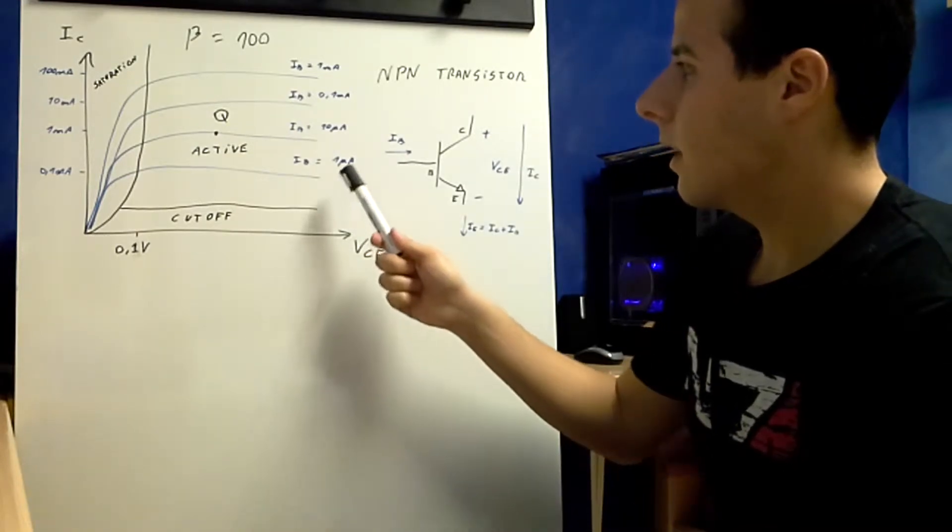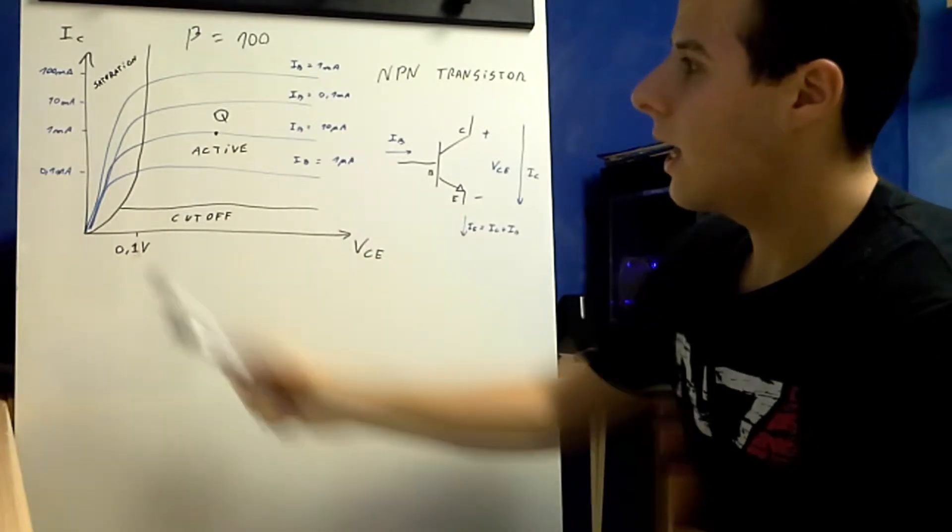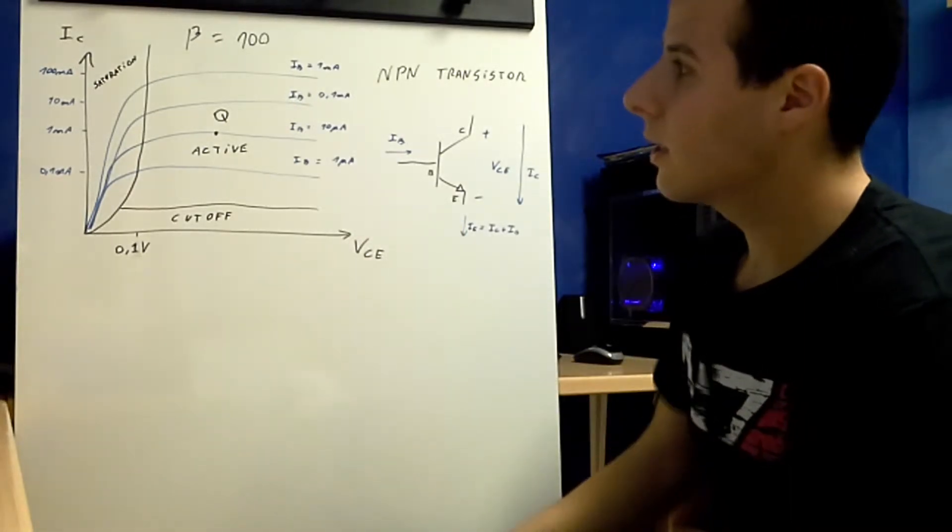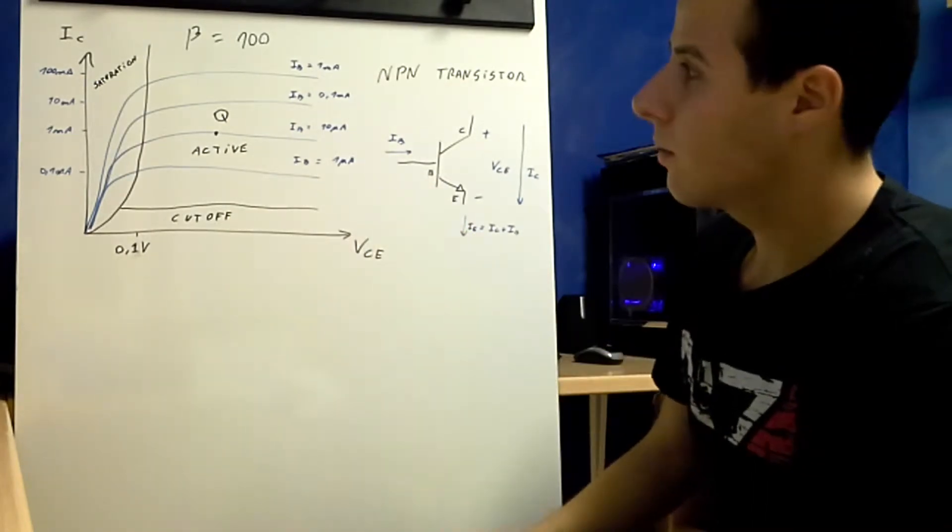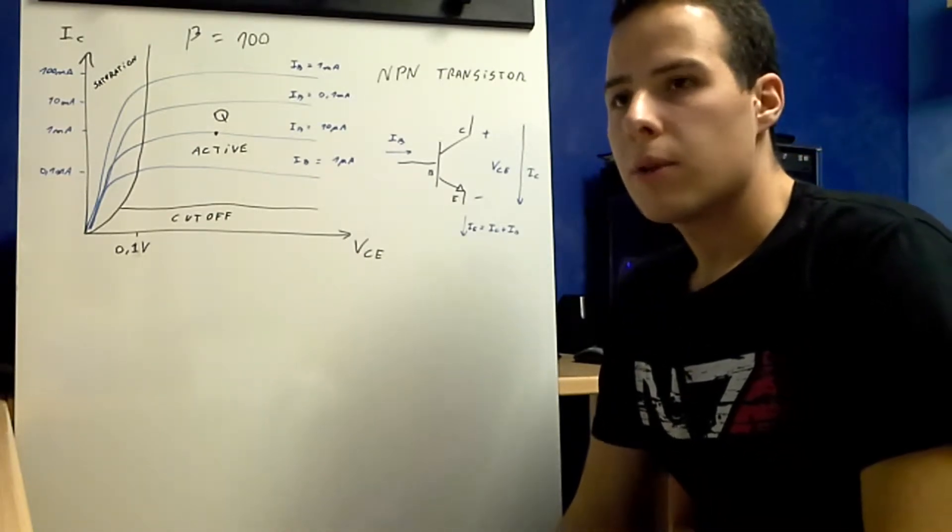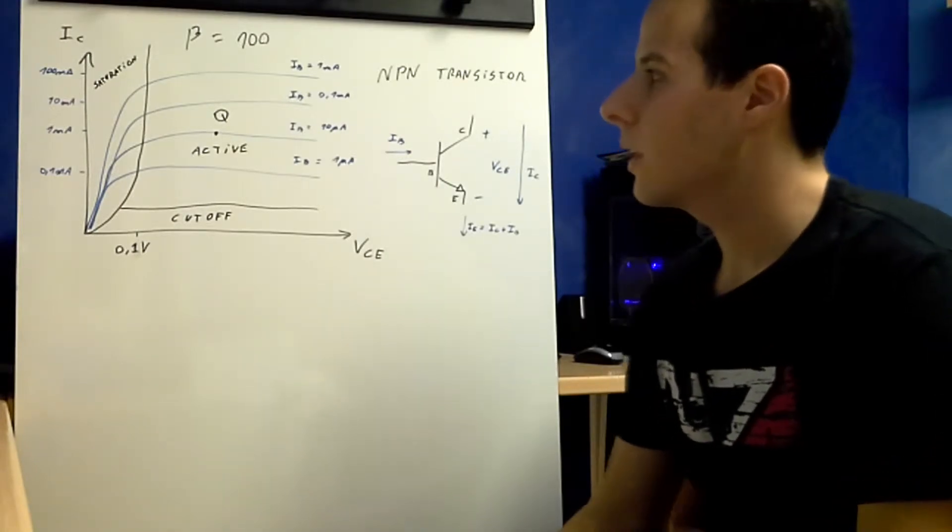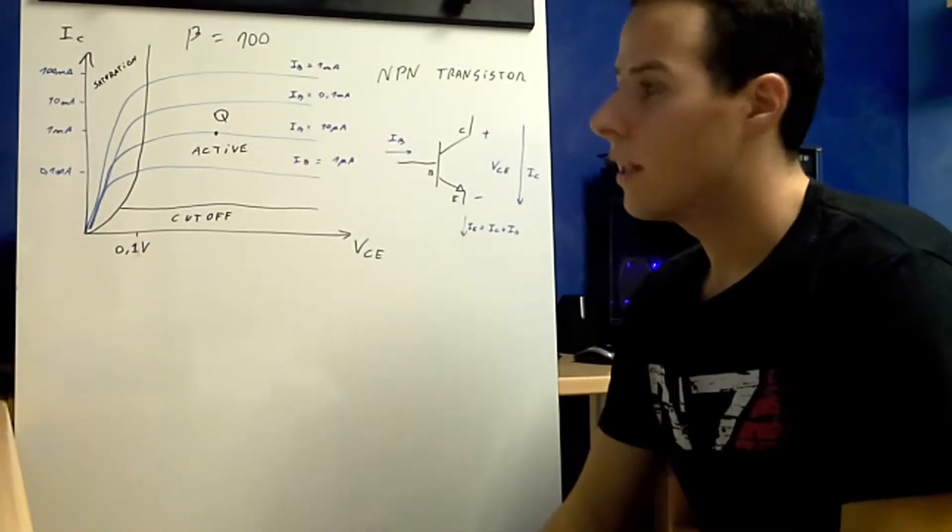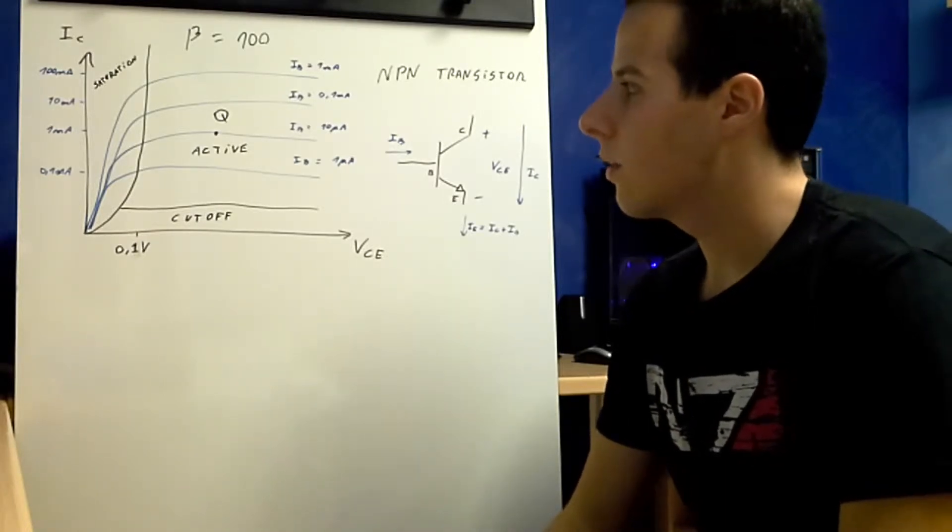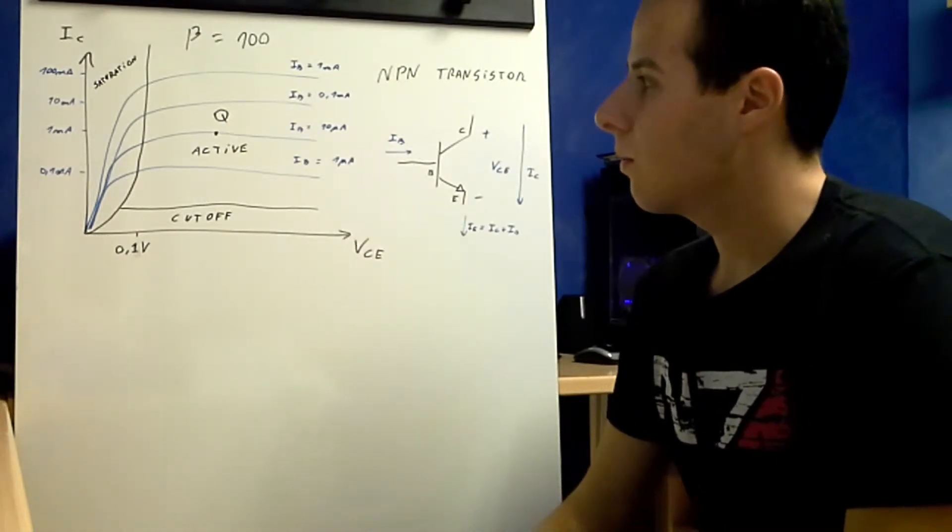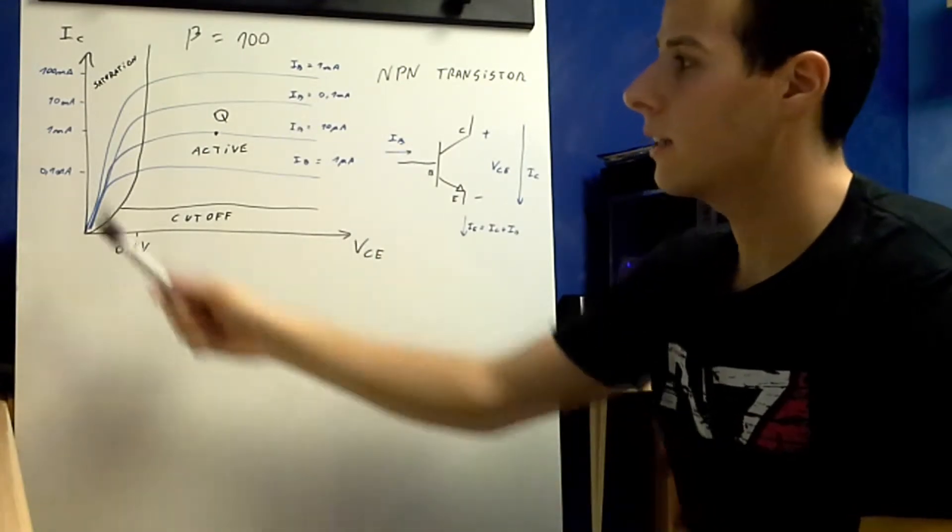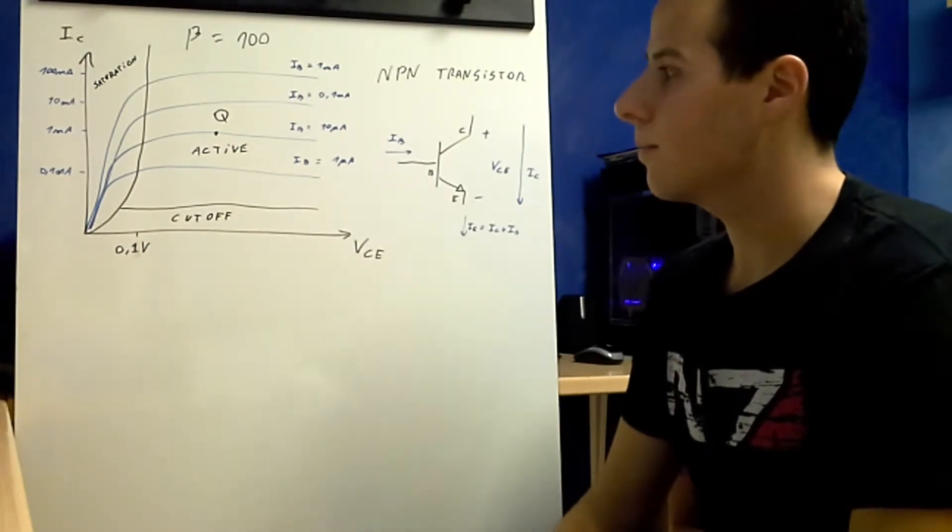And if you pay attention, you will see that here you have one microamp of base current and there you have 0.1 milliamps of collector current. Here you have 10 microamps of base current and 1 milliamp of collector current. So, as you can see, there is a proportionality relation between these two currents. And that proportionality constant is known as beta. And in this case it is 100. So, if you have 1 microamp, you will obtain 100 times that in your collector.